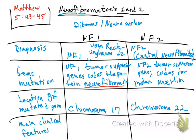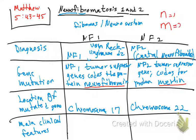So the key clue: merlin is for type 2 and neurofibromin is for type 1. A memory trick: write the letter 'N' for type 1 — that's neurofibromin. For type 2, write two N's together, which forms an 'M' — M for merlin. So M for merlin, type 2; N for neurofibromin, type 1.